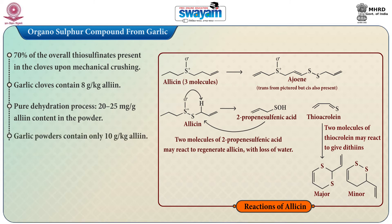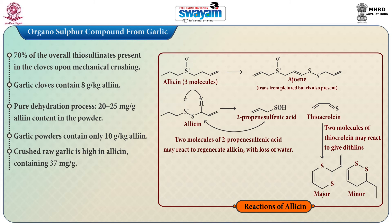However, garlic powders contain only 10 grams per kg alliin at most, indicating that most of the alliin is lost during dehydration. Crushed raw garlic is high in allicin, containing 37 milligrams per gram.